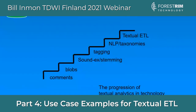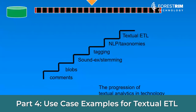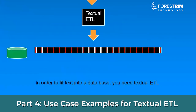Textual ETL does a lot of things. It reformats your raw text so that you can put it into a standard database management system. This is a ladder that the industry has followed to get to where we're at today. With Textual ETL, we can look at both text and context, and we can take text and put it into a database management system today. Keep this progression in mind because it sets the stage for everything we're going to be talking about.